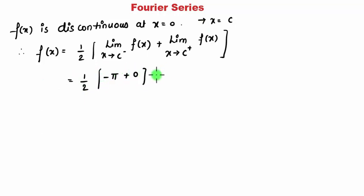0, which comes to be minus pi by 2. Now let's substitute it, so I get minus pi by 2 equals minus pi by 4 minus 2 by pi, which comes 1 upon 1